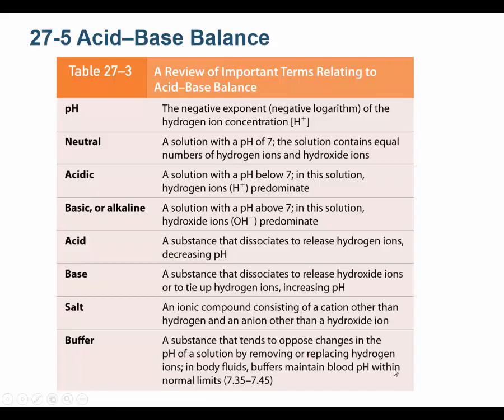Alright folks, 27.5 is the acid-base — well, it's actually one of two acid-base parts to this chapter. This introduces you to the pH concept, and that probably is the hardest part. The pH scale gets counterintuitive — it is actually counterintuitive — and it gets tricky on test questions. Usually it's just because people forget that when pH goes down, hydrogen ion concentration goes up, and vice versa.